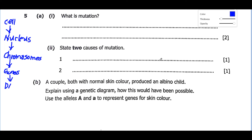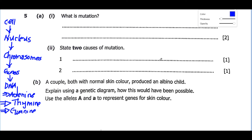Inside the genes is where we have the DNA. The DNA is made up of nitrogenous bases: first, Adenine; second, Thymine; third, Guanine; and fourth, Cytosine. These bases are bonded to each other — Thymine (T) is bonded to Adenine (A), and Guanine (G) is bonded to Cytosine (C). This is the normal arrangement of nitrogenous bases in a cell.